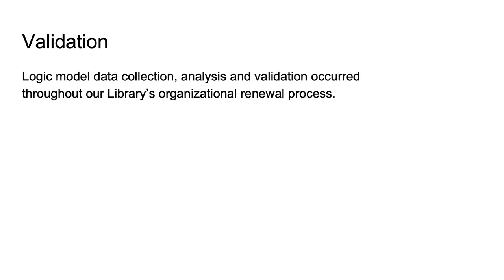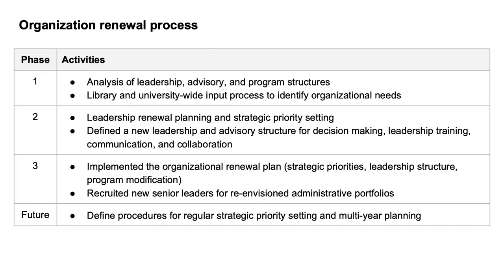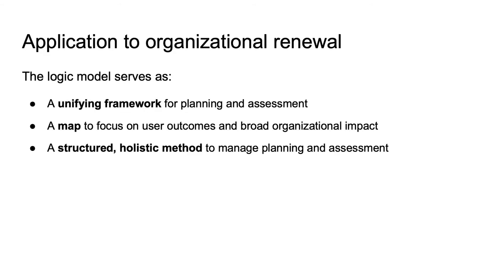Now that we have shown our high-level model, I would like to talk about how we designed and validated this model. The data collection, analysis, and validation for our logic model occurred through our library's organization renewal process following three phases built sequentially. In phase one, we conducted a leadership advisory and program structure analysis using library and university-wide input. The outcome of phase one informed planning in phase two, where we focused on leadership renewal planning and strategic priority setting, and by the end of this phase we had largely populated our logic model. In phase three, we implemented our plan and recruited new senior leaders for the re-envisioned administrative portfolios. Throughout our process, the logic model framework served as a way to bring together our organizational assessment and strategic planning activities, serving as a map for focusing on user-centered outcomes while also connecting our strategic priorities and organizational structures.